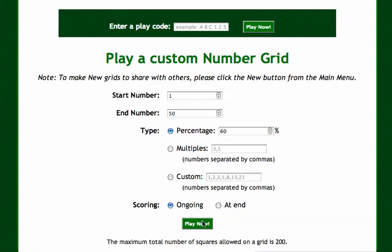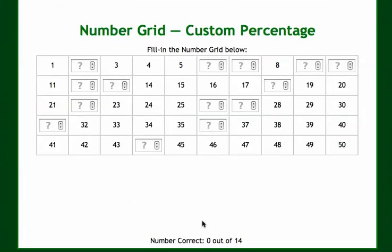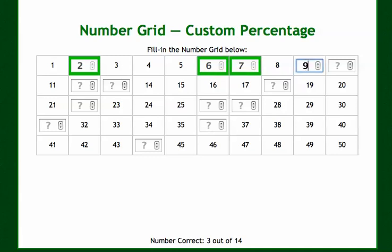Click Play now. You can see all of these question marks — students have to fill in the number grid. So we know this is 2. Green means it's correct, red means it's incorrect. So 6, 7, 9, 10.